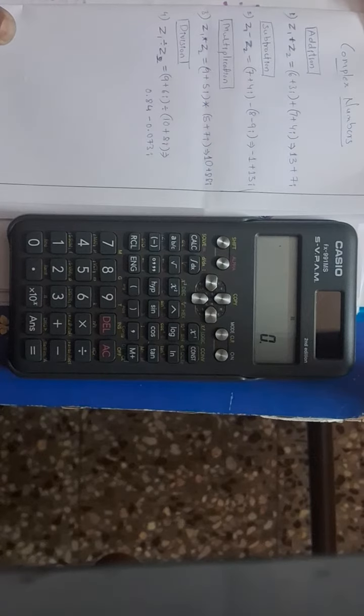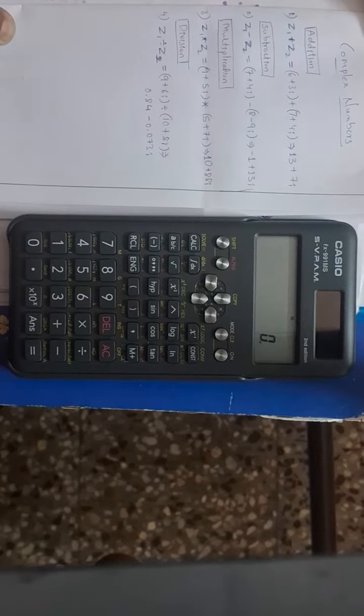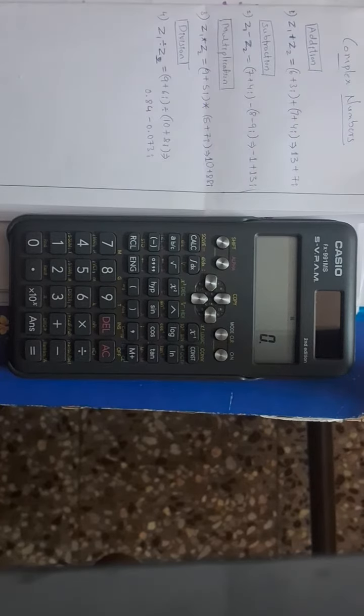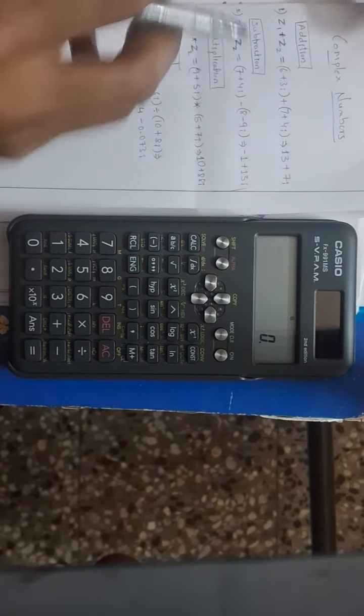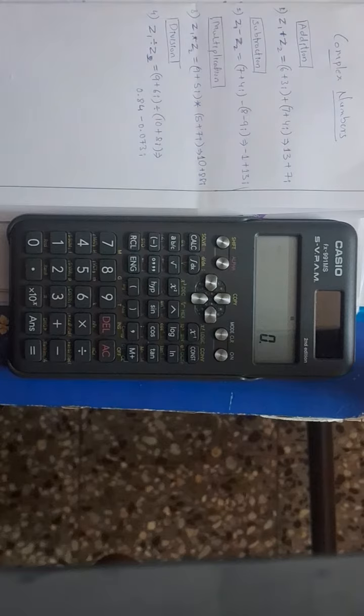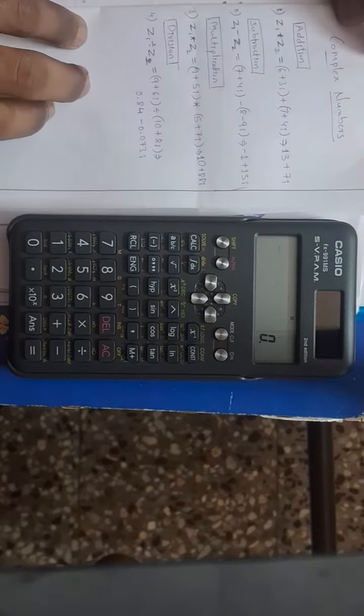You will see operations of complex numbers in calculator. First, addition of two complex numbers: z1 plus z2, that is (6 plus 3i) plus (7 plus 4i).